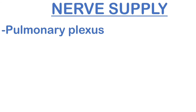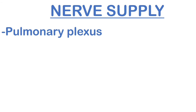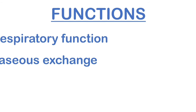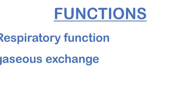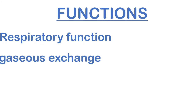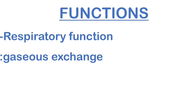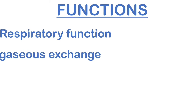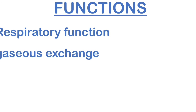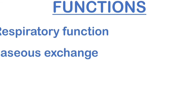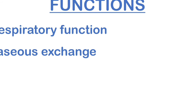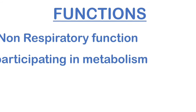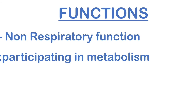Let's talk about the nerve supply. First is the pulmonary plexus, which is a branch of the vagus nerve and the sympathetic trunk. Finally, the functions of the lungs — please listen carefully as this is an important anatomical part. There are two types of functions: the first is the respiratory function, which includes gas exchange; and the second is the non-respiratory function, which includes participating in metabolism.